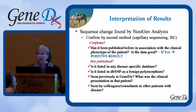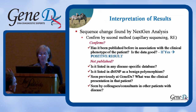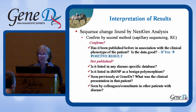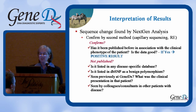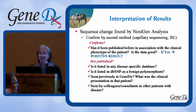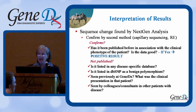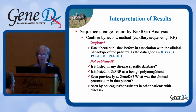As I told you, we confirm by a second method. If it confirms, and in most cases it does, we start asking ourselves questions. Has this mutation been published before in association with the phenotype that was seen in the patient? And is that data that was published any good? And if it is, you have a positive result, and we will sign out a positive report to you.